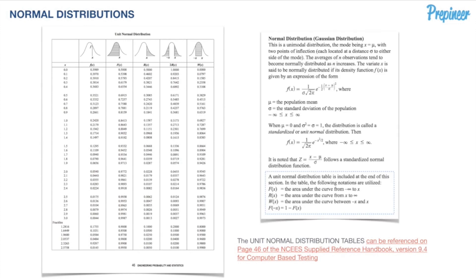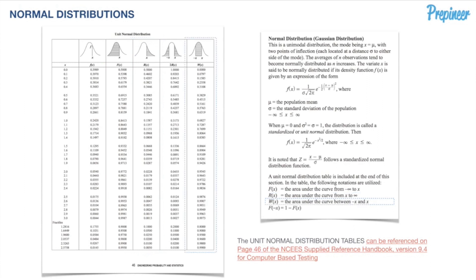We've highlighted the section at the bottom that explains what a unit normal distribution table is and what each column means. F(x) is the area under the curve from negative infinity up to x. R(x) is from x to infinity. W(x) is the area between negative x and x — that's the uniform banded region — though we rarely get to use that column directly, so we have to pick and combine columns to get our final result.